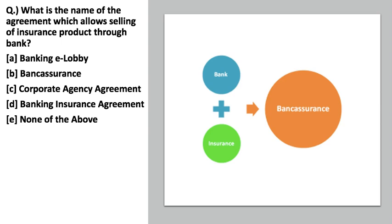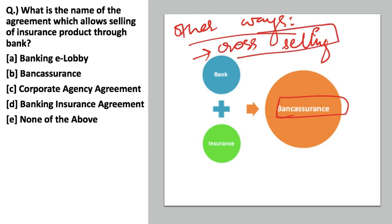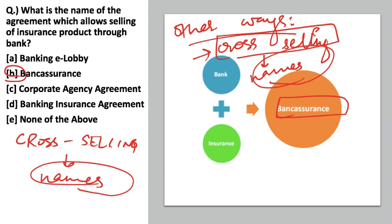The last question: what is the name of the agreement that allows selling insurance products through a bank? This is a type of cross-selling. The question I have for you today is: what are the other ways commercial banks in India can engage in cross-selling, and what are the official names of those methods? I want you to search for this and we will discuss it tomorrow.